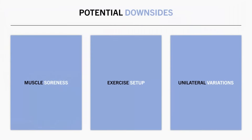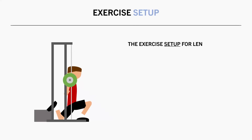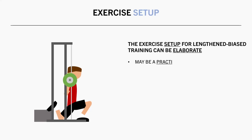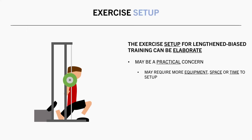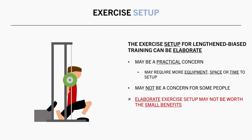Another potential issue with lengthened-biased training is the exercise setup. When this type of training is taken too far, the setup required to achieve the maximally lengthened-biased movement pattern can be elaborate. While it isn't a physiological issue, it can become a practical limitation — it may require more equipment, more space, or more time to set up. If you have unlimited time and train in a home gym or a large gym with lots of space and equipment, this may not be a concern. But for a smooth, time-efficient training session, excessive focus on lengthened-biased training may simply not be worth the small additional benefits.